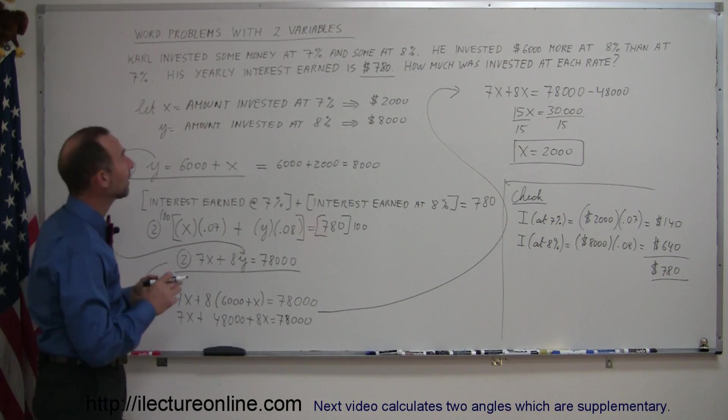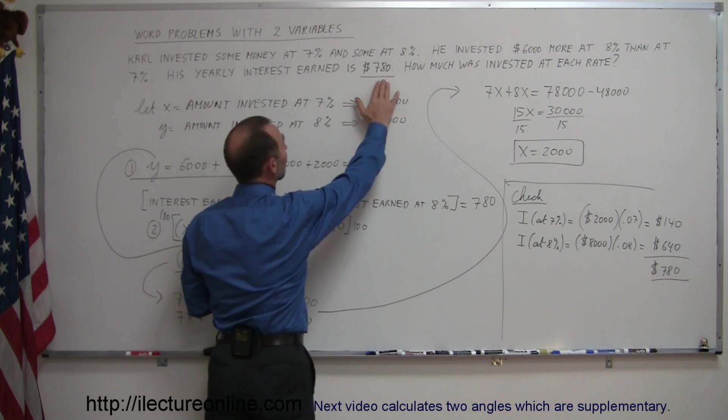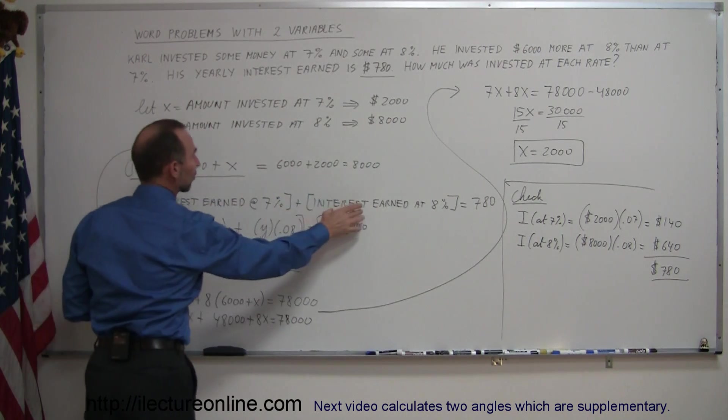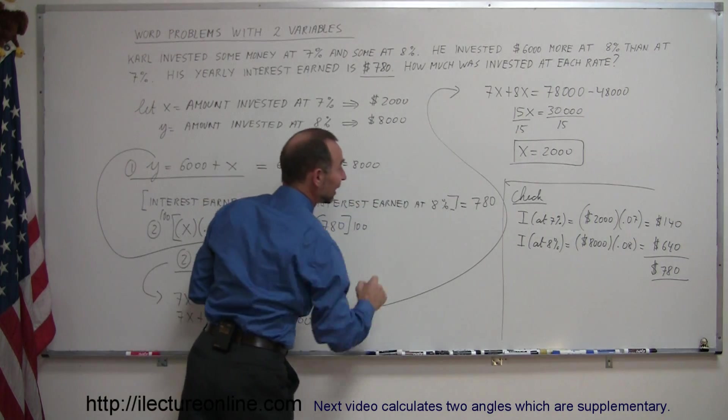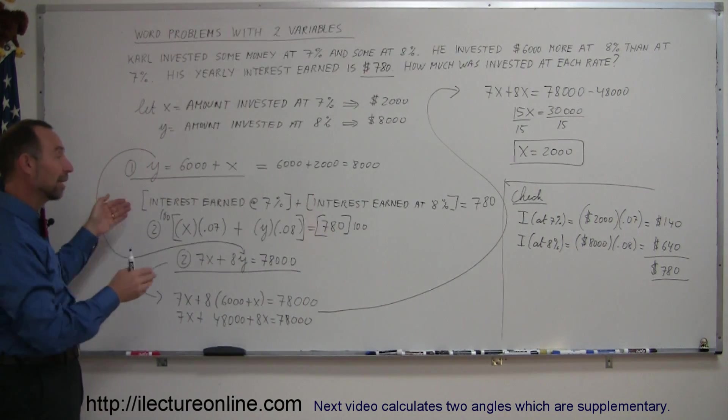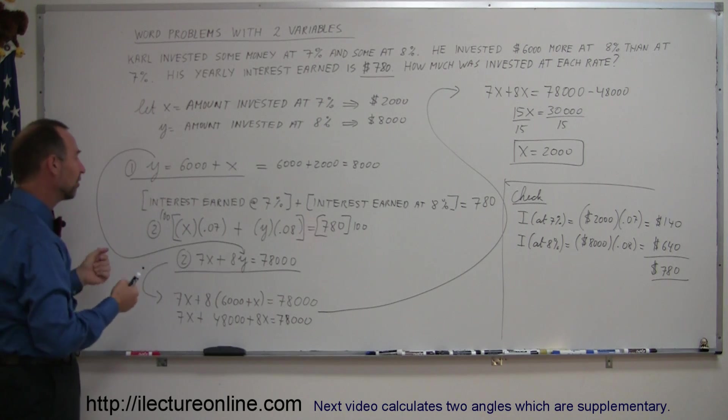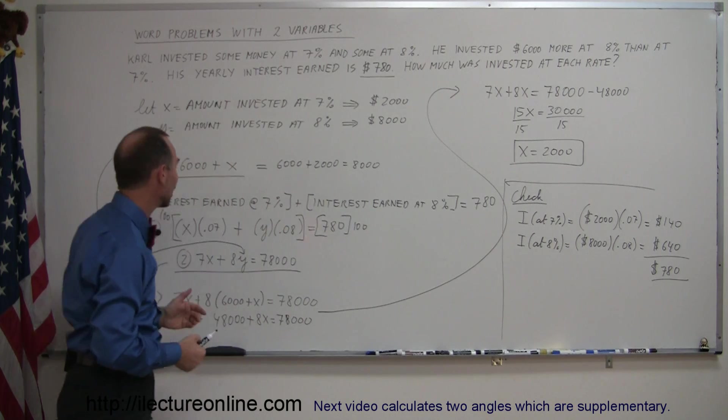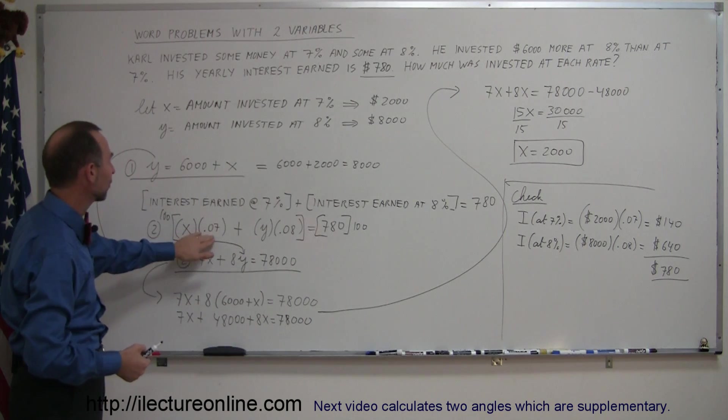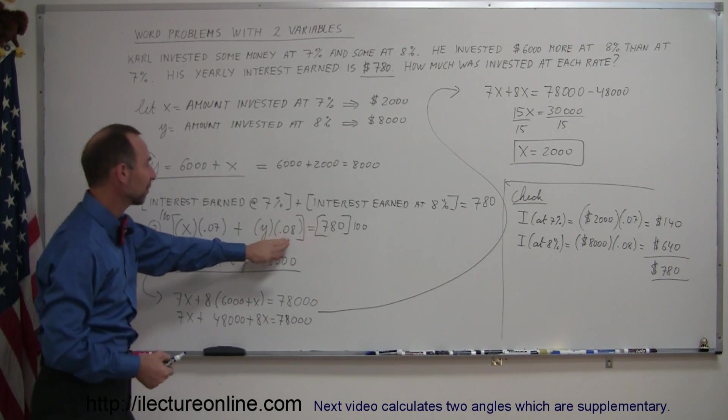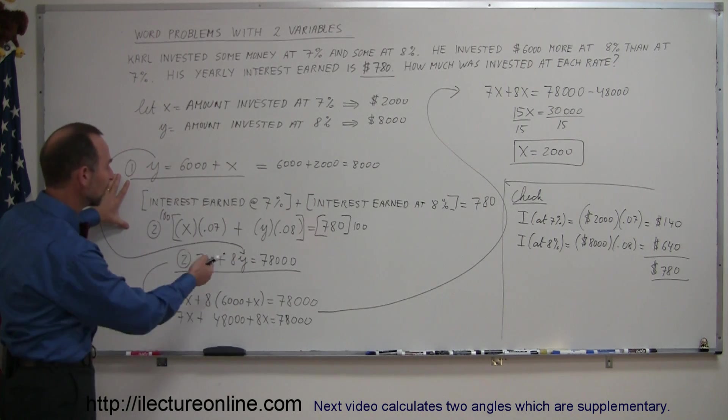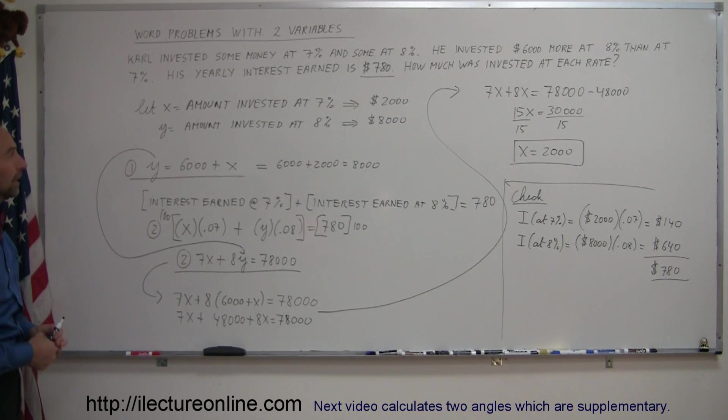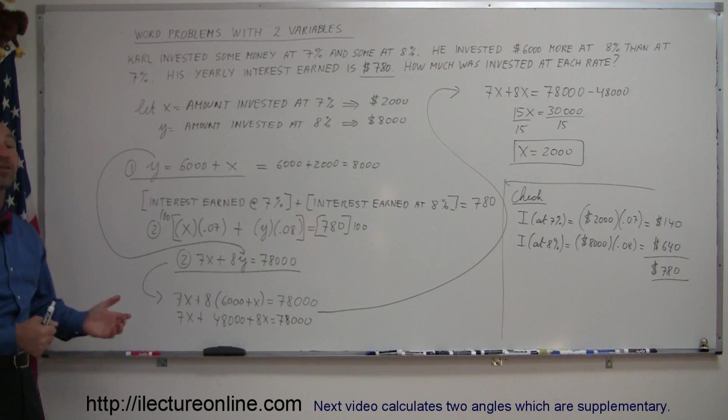Second equation: we find that the total interest earned is $780. So we say the interest earned at 7% plus the interest earned at 8% equals $780. Notice that it's not the mathematical equation yet. You write it out so it makes more sense. Then you mathematically represent how much is earned at 7%, how much is earned at 8%. It's simply the amount invested times the rate, plus the amount invested times the rate. Now you have two equations and two unknowns that you can solve simultaneously. And that's how you do those problems. Let me see if I can come up with some additional examples.